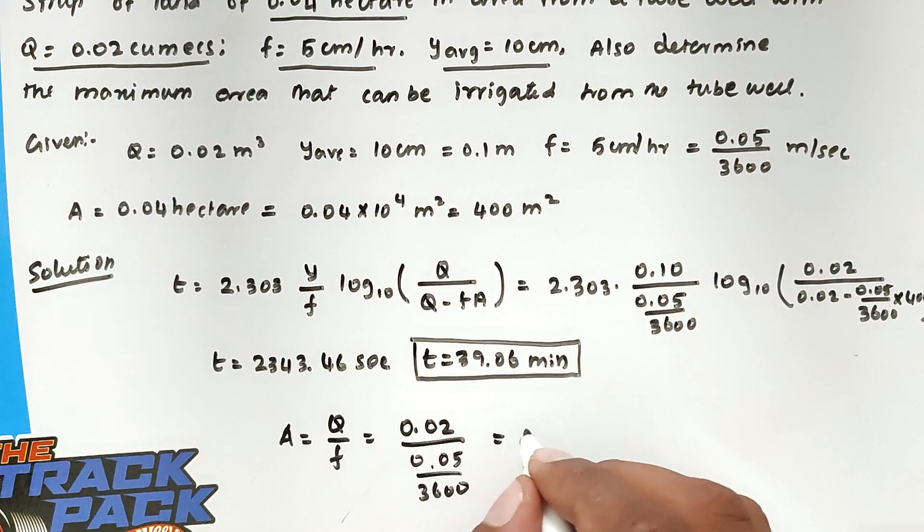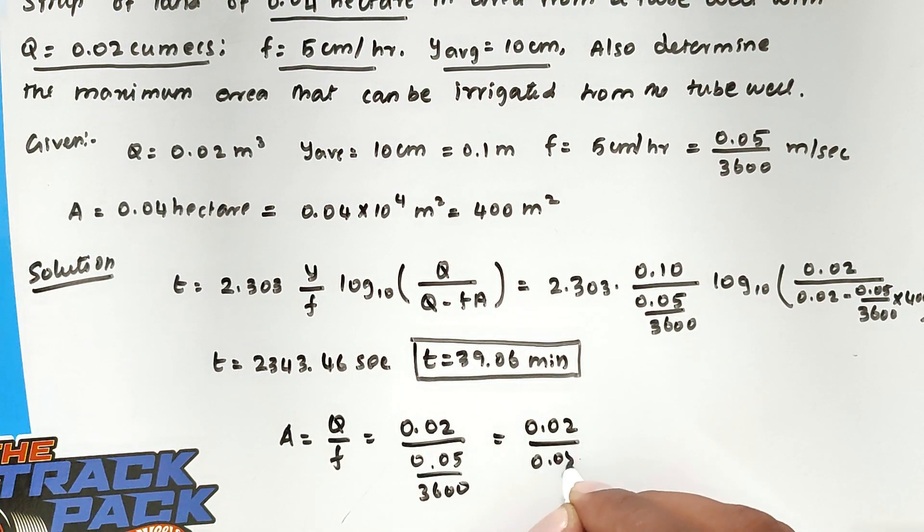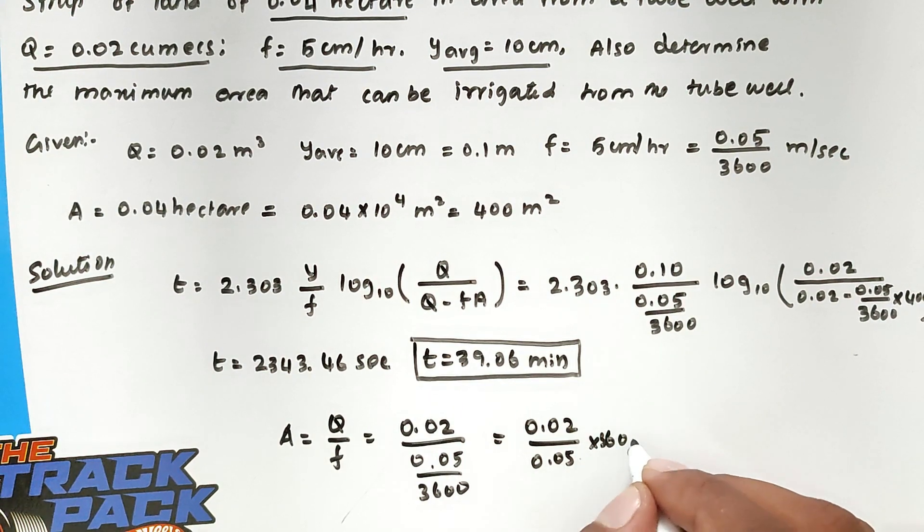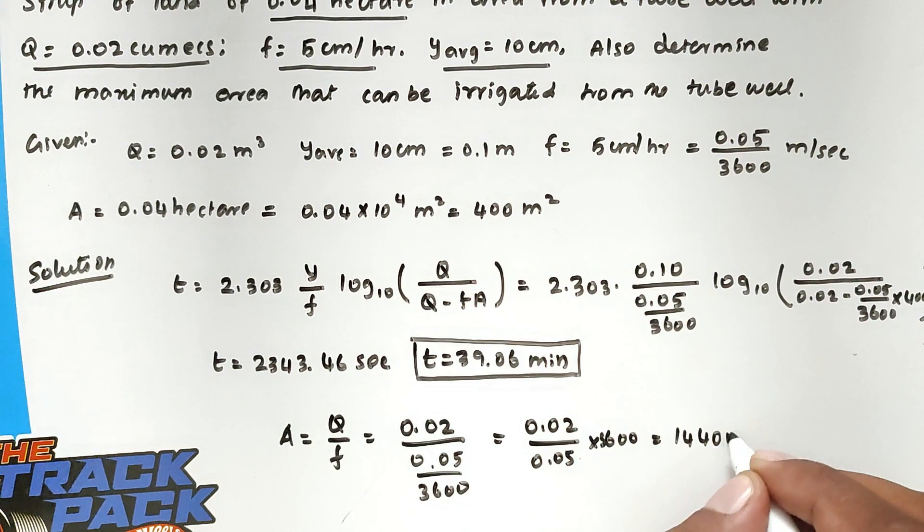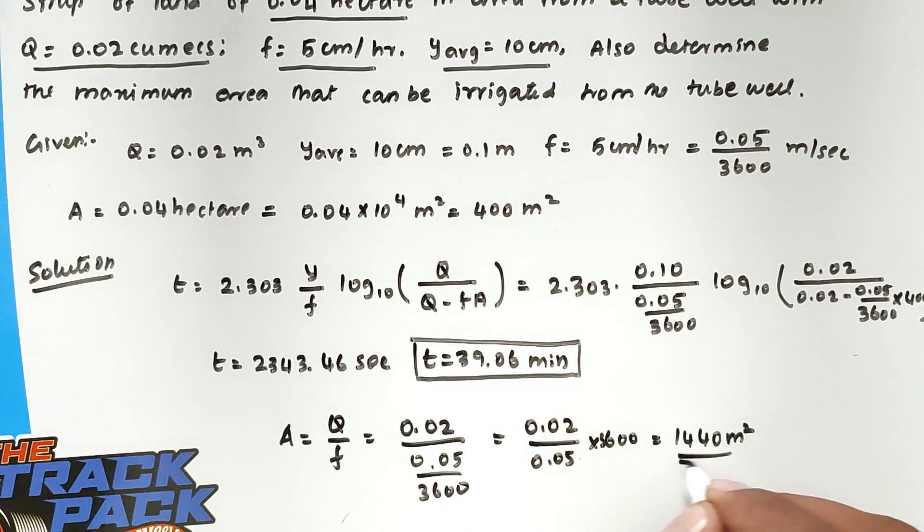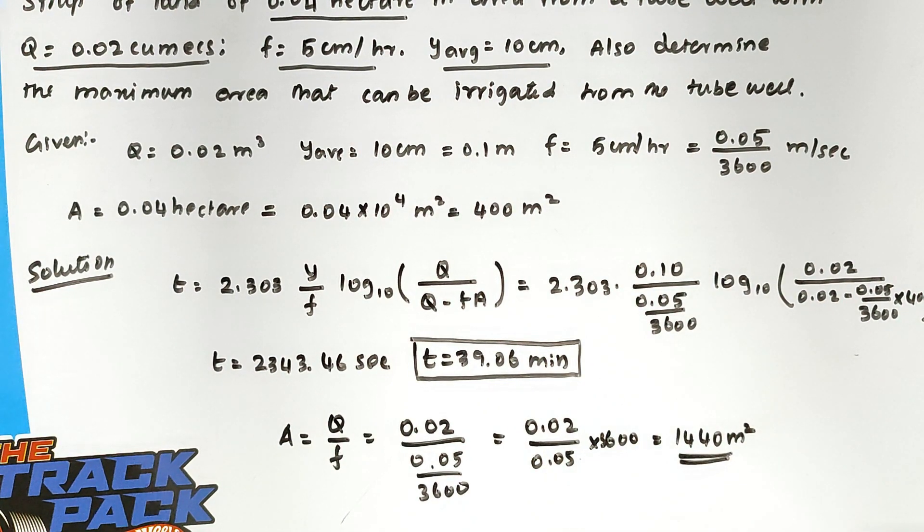We can write it as 0.02 divided by 0.05 into 3600. Solving this, we get the value 1440 meter square. This is the maximum area that can be irrigated.